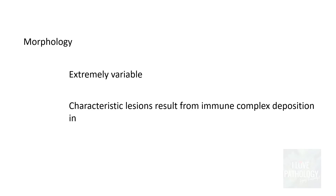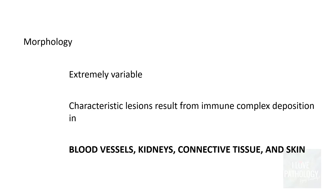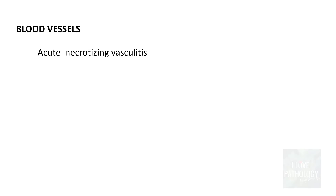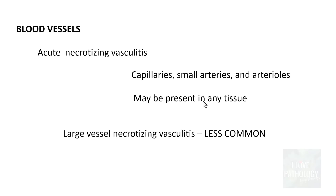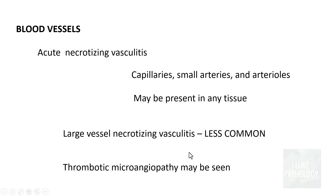Remember the morphology of SLE is extremely variable. The characteristic lesions result from immune complex deposition in various tissues and organs like the blood vessels, kidneys, connective tissue, and skin. Firstly, blood vessels. The characteristic feature of SLE involving the blood vessels is acute necrotizing vasculitis. It involves small blood vessels, particularly the capillaries, small arteries, and arterioles. It can be present in any tissue of the body, but large vessel necrotizing vasculitis is less common compared to small vessel necrotizing vasculitis.